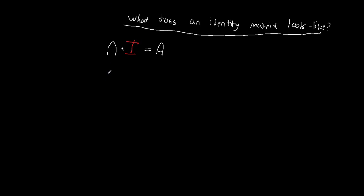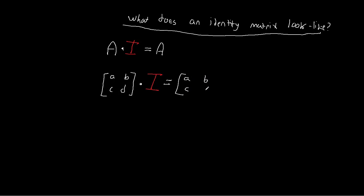So let's go through a concrete algebraic example. Let's say that A is a two-by-two matrix with values A, B, C, and D. We're going to multiply this by some unknown matrix I that we don't know yet. The idea is that we're going to get back that same matrix — A, B, C, D. This is what it means to have a square matrix times I giving us back the same square matrix: the same elements in the same positions.